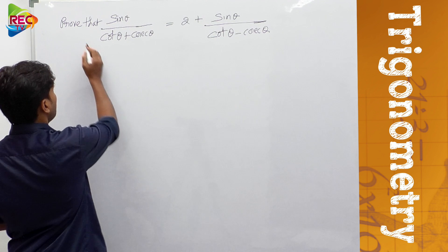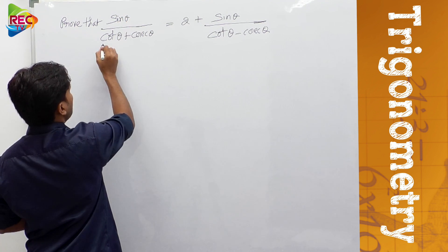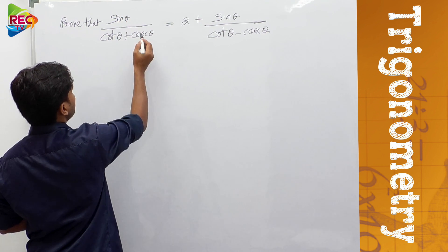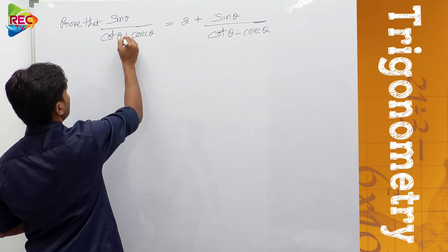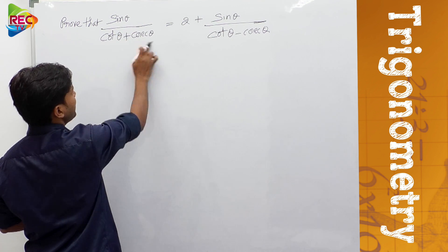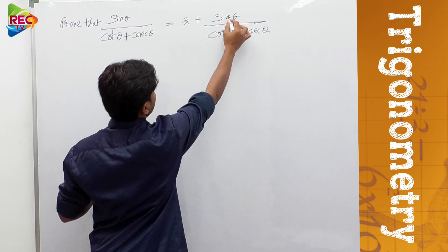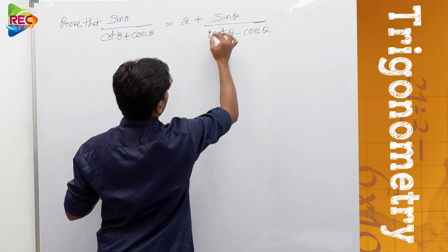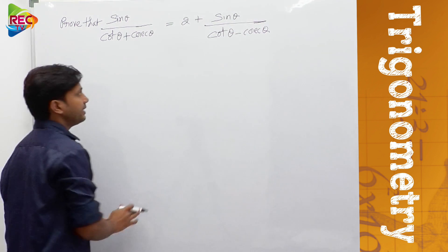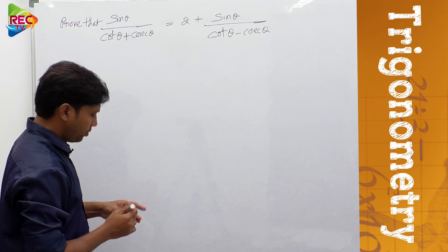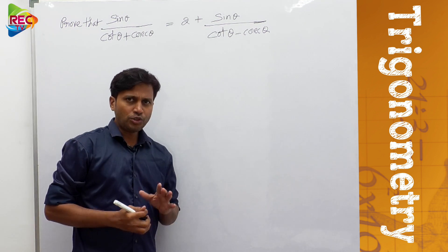Here we need to prove that sin θ divided by (cot θ + cosec θ) is equal to 2 plus sin θ divided by (cot θ - cosec θ).